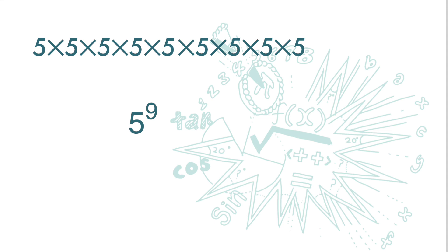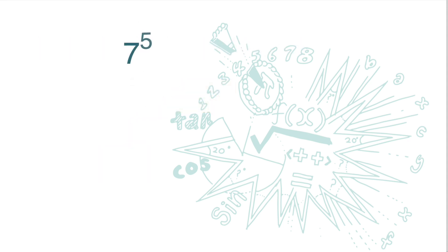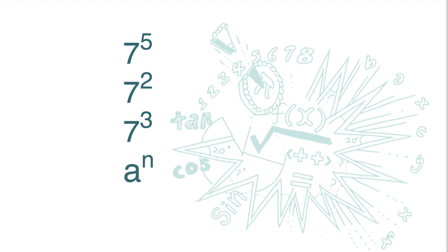Here, we call the 5 the base and the 9 the index. For this notation, we read it as 7 to the power of 5. This is 7 to the power of 2, but we usually just say 7 squared. This is 7 to the power of 3, but usually we just say 7 cubed. And this one is a to the power of n.